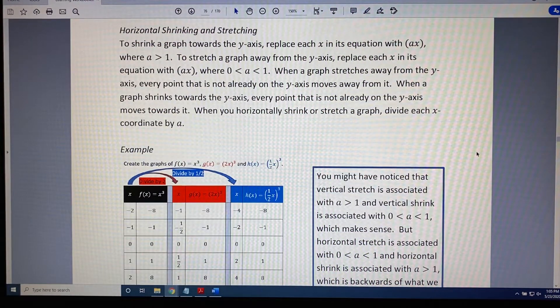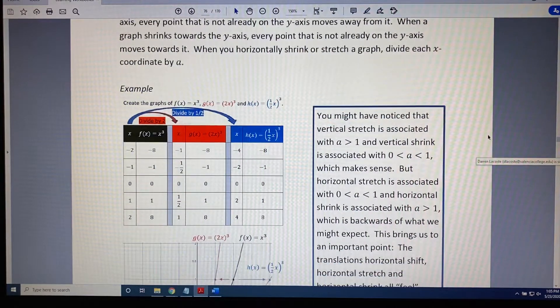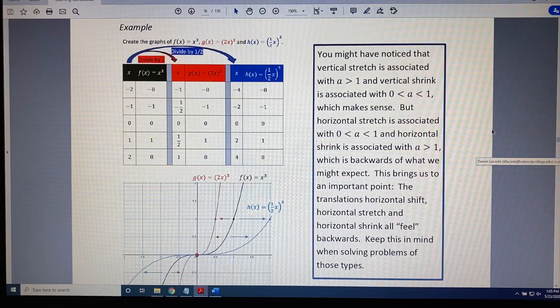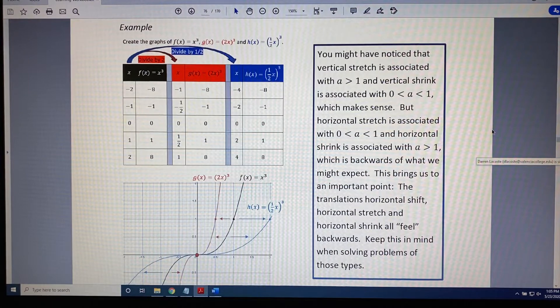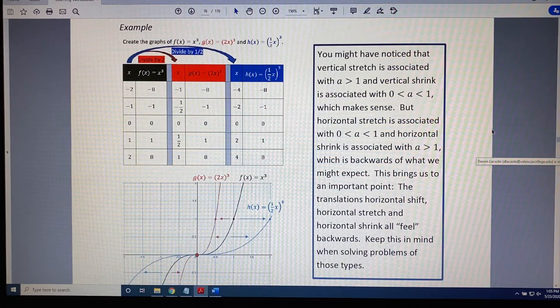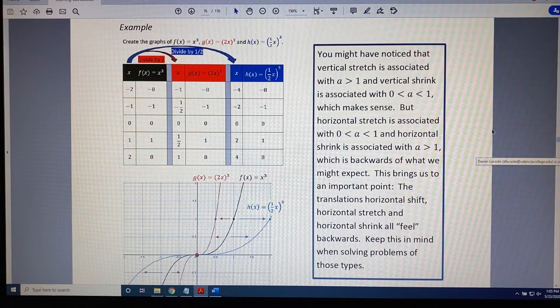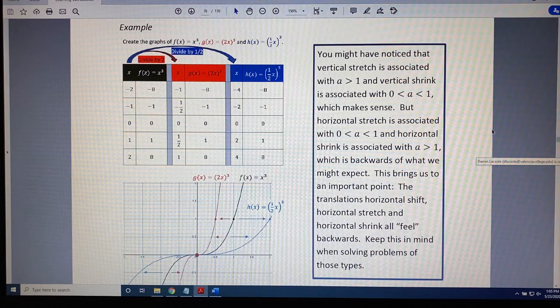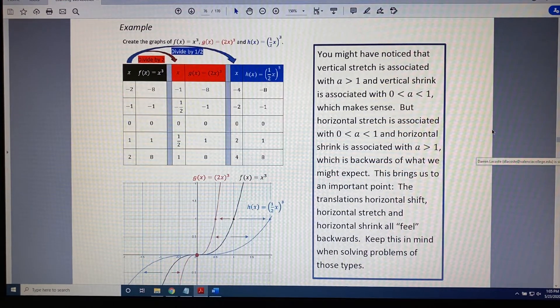Let's look at an example. We are asked to create the graphs of f(x) = x³, g(x) = (2x)³, and h(x) = (½x)³. Let's go ahead and do that little by little. I'm going to zoom in so you can see this table of points more clearly.